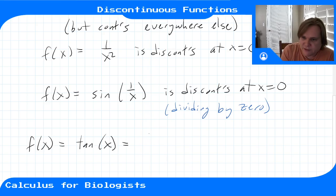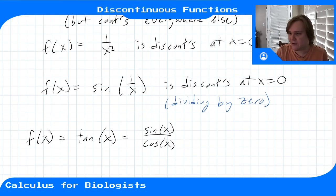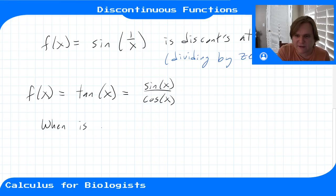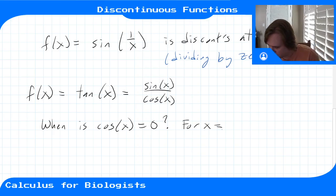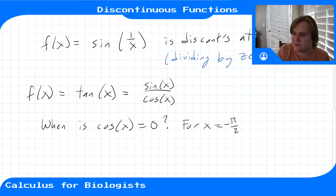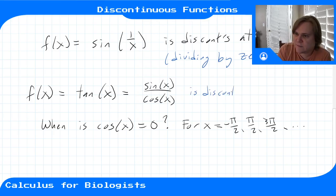If you remember from trigonometry, tangent is sin(x) divided by cos(x). We said sine and cosine were continuous functions, so what's happening? Well, when is cos(x) zero? It's zero at multiples of π/2: x = −π/2, π/2, 3π/2, and so on. Anytime cosine is zero, we're dividing by zero, so tangent of x is discontinuous at these problem points — whatever makes the denominator zero is a problem point where the function will be discontinuous.